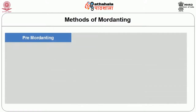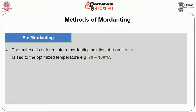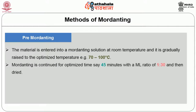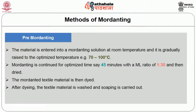In pre-mordanting, the material is entered into a mordanting solution at room temperature and it is gradually raised to the optimised temperature, for example 70 to 100 degrees centigrade. Mordanting is continued for the optimised time, say 45 minutes, with a material liquor ratio of 1 to 30, and then dried. The mordanted textile material is then dyed. After dyeing, the textile material is washed and soaping is carried out.